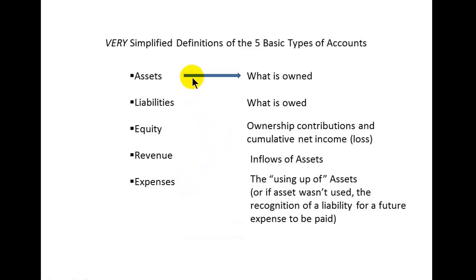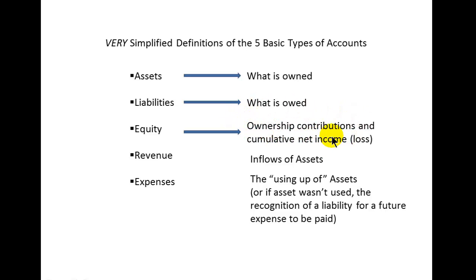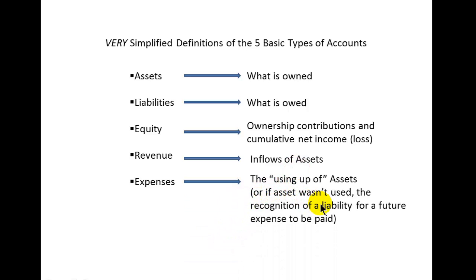We'll define those as follows: assets are what is owned by the business; liabilities are what is owed by the business; equity represents ownership contributions and the cumulative net income or net loss since the start of the business — it takes money to make money, so those are the initial contributions. Revenue is defined as the inflows of assets during the period, and expenses are defined as the using up of assets, or perhaps the recognition of a liability for a future expense to be paid, which is called an accrual.